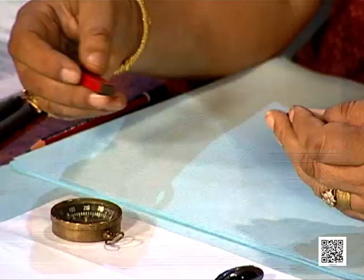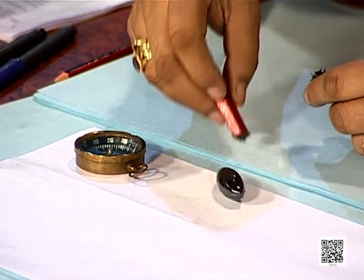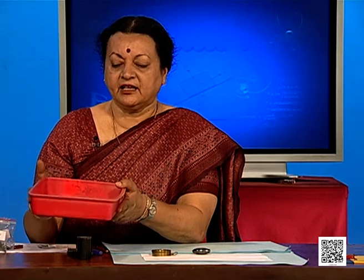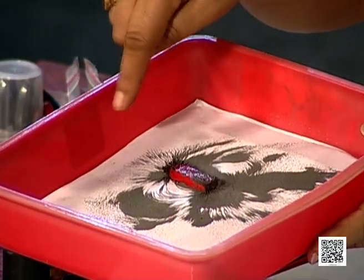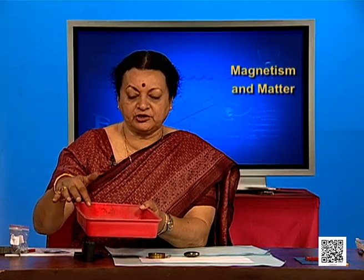Like poles of a magnet repel each other and unlike poles attract. There is a field around a magnet — a space where its influence can be felt. You might have done experiments where you sprinkle iron filings onto a magnet and observe the pattern, which shows there is a region of influence.